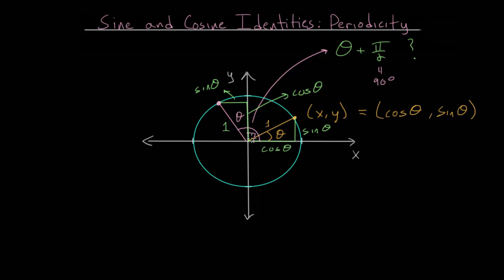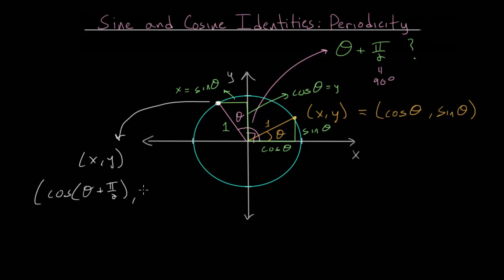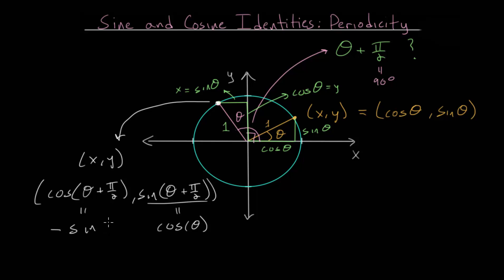Notice that in this new triangle, the cosine of theta is the y-value of this point, and the sine of theta is the x-value of the point. We can also look at this point's x-y coordinate as we normally do, where the x-value is the cosine of the original angle measured from the positive x-axis — that angle being theta plus pi over 2 — and the y-value is the sine of that angle theta plus pi over 2. The y-value from our constructed triangle is the cosine of theta, and the x-value is the sine of theta, but it is actually negative since the x-value here is negative.